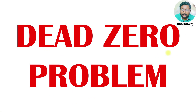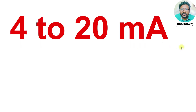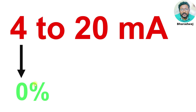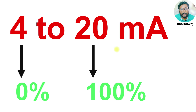In this video, I will discuss the dead zero problem. In the previous videos, we discussed 4 to 20 mA. The 4 represents the zero scale reading, or 0% of the process variable, and the 20 represents the full scale value, which is 100% of the process variable.